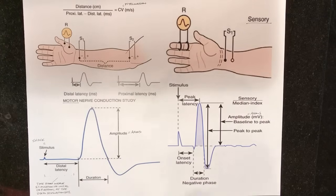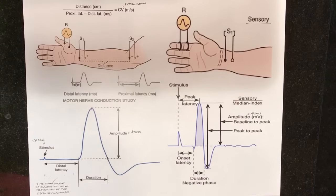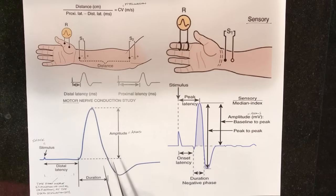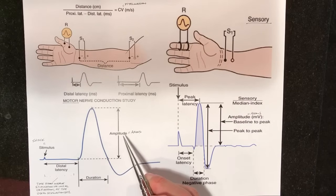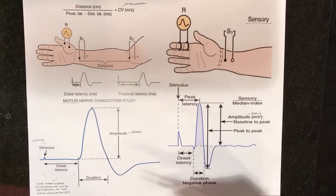Distal latency is measured in milliseconds. It gives us the time from when we shock the patient to when we see activity in the muscle, telling us how well that motor neuron and its axons are conducting the impulse. The purpose of a nerve is to propagate an electrical depolarization, get to the motor end plate at the neuromuscular junction, and then depolarize the muscle. So distal latency is the time from the stimulus to the initial deflection of the recording electrode. Amplitude directly reflects how many axons are participating in that depolarization — it's a summation of electrical depolarizations. The more axons that are intact, the higher the amplitude.